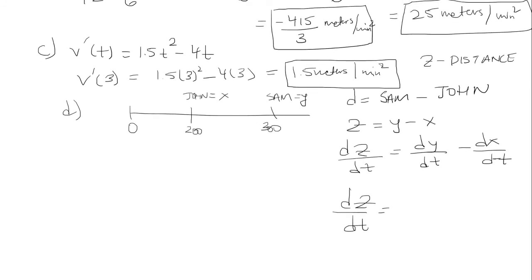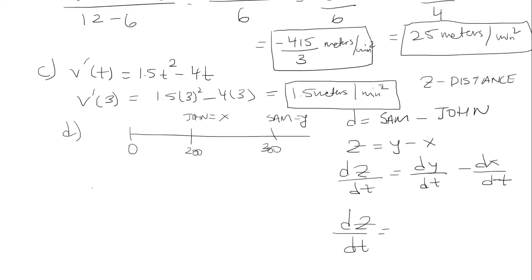So velocity for Sam is defined to be one half t cubed minus 2t squared plus 100. So I need to see what his velocity is at time t equals 3. So I'm plugging t equals 3 in here and get 95 and a half. And that is meters per minute. Okay so that's going to be 95 and a half.